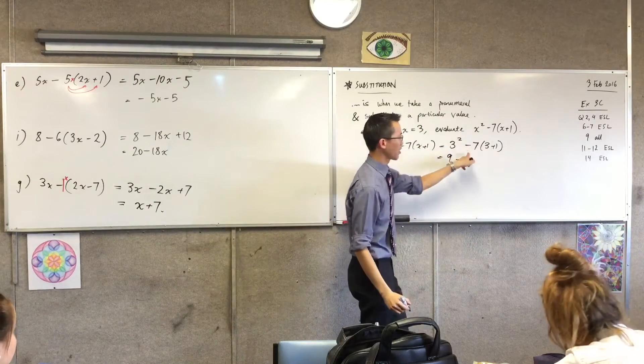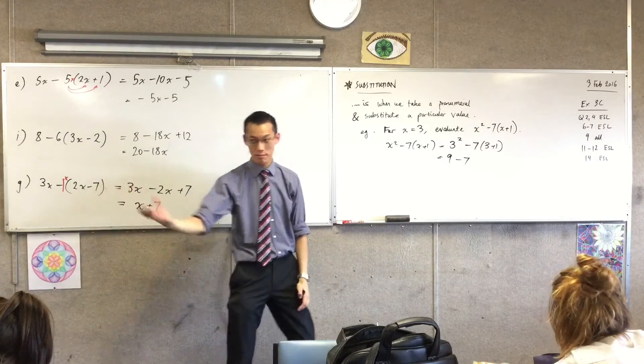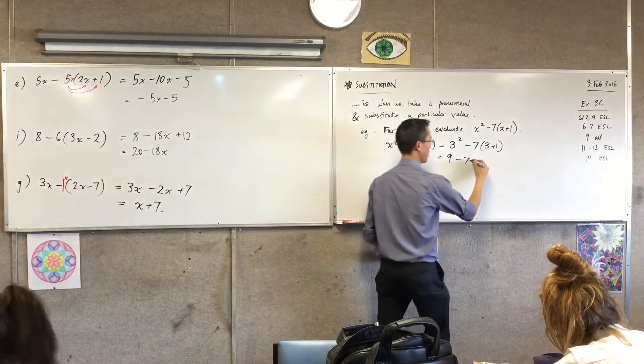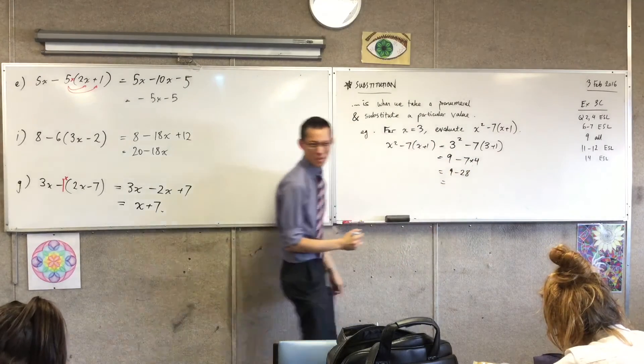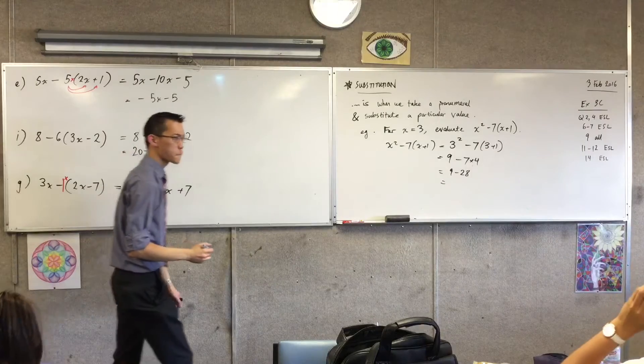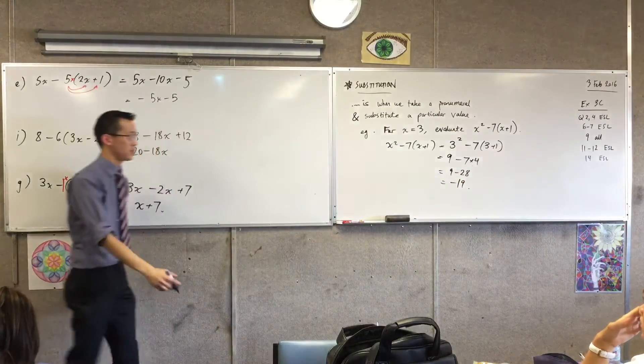I've got to, well, I have a choice here. I have to expand the brackets, or I can just say 3 plus 1 is 4. So I've got 9, take away 28. What is 9 take away 28? Minus 19. Negative 19. And that's it. That's all there is to substitution.